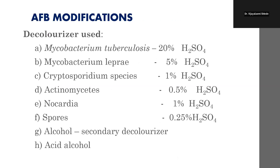Modifications of AFB staining: there are multiple acid-fast organisms, not just MTB. Mycobacterium tuberculosis uses 20% H₂SO₄. Mycobacterium leprae uses 5% H₂SO₄. Cryptosporidium uses 1% H₂SO₄. Actinomyces uses 0.5% H₂SO₄. Nocardia uses 1% H₂SO₄. Fungal spores use 0.25% H₂SO₄. Acid alcohols are also used as secondary decolorizers, especially for leprae, where other decolorizers such as HCl can also be used.